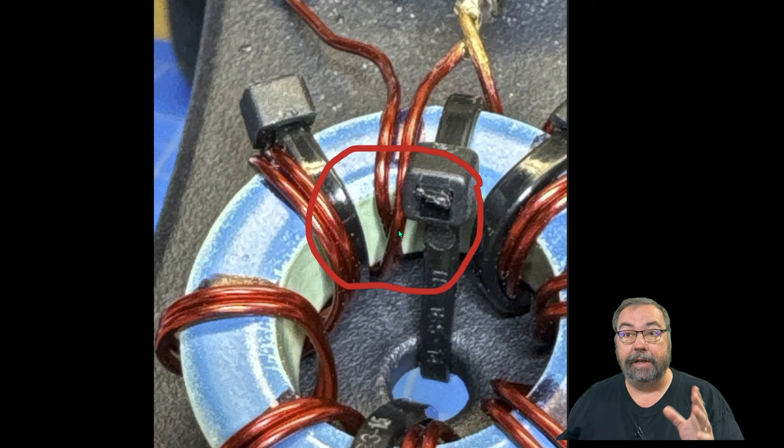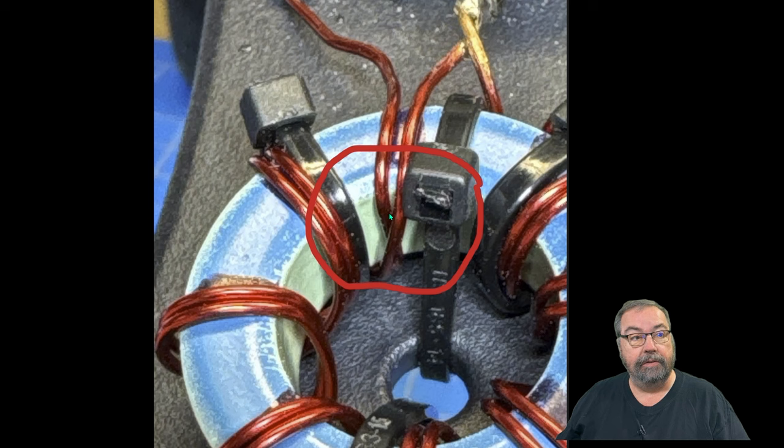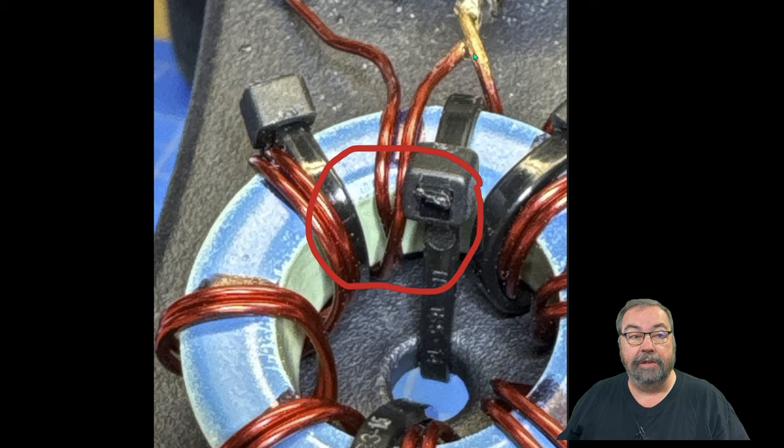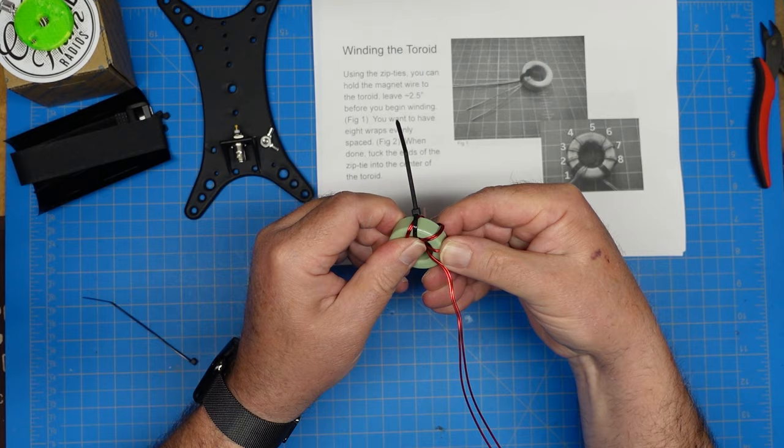Future Jim here. At this moment I screwed the pooch. Didn't catch this until later when trying to test the antenna. These two wires got crossed right here. Because of that, my two center wires were not the correct center wires. Connected everything up, it wasn't working. I had extremely high SWR. Pay attention to that and closely examine your toroid. Back to past Jim.